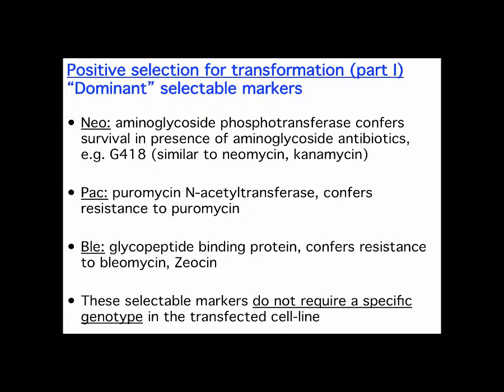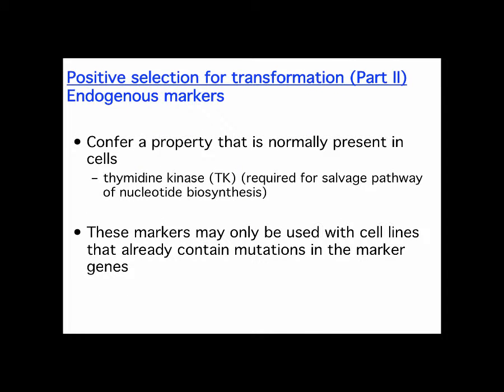There's another kind of selection that takes advantage of genes already in the cell. This only works if the eukaryotic cell is deficient in a particular gene you're putting in, or has slightly different activity relative to the gene you're inserting. The classic example is thymidine kinase. Thymidine kinase adds a phosphate to thymidine — making the diphosphate and triphosphate — which is really important for DNA replication.